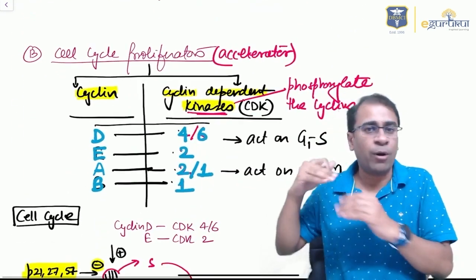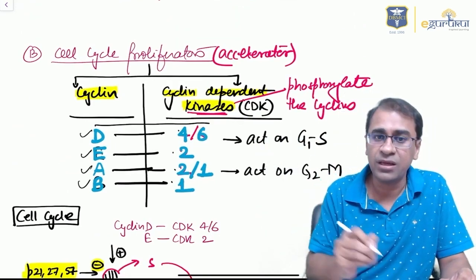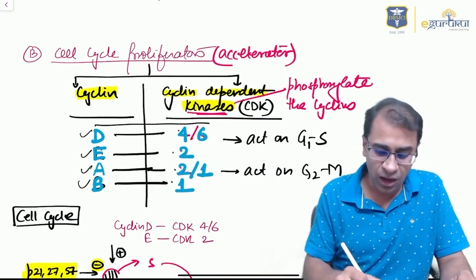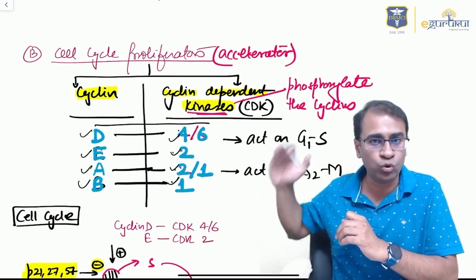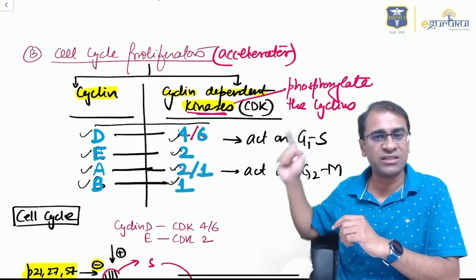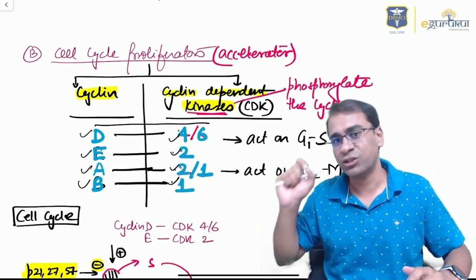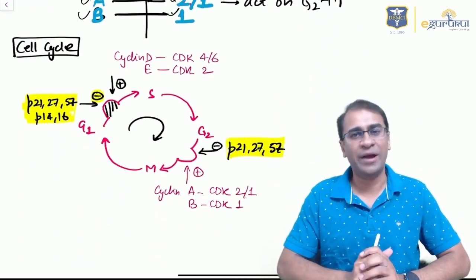The proliferators are very simple to remember. In cyclins it's cyclin D, E, A, B. The cyclin-dependent kinases which activate them are 4, 2, 2, 1. The sequence: D, E, A, B and 4, 2, 2, 1. The first two act on G1-S phase, the next two act on G2-M phase.